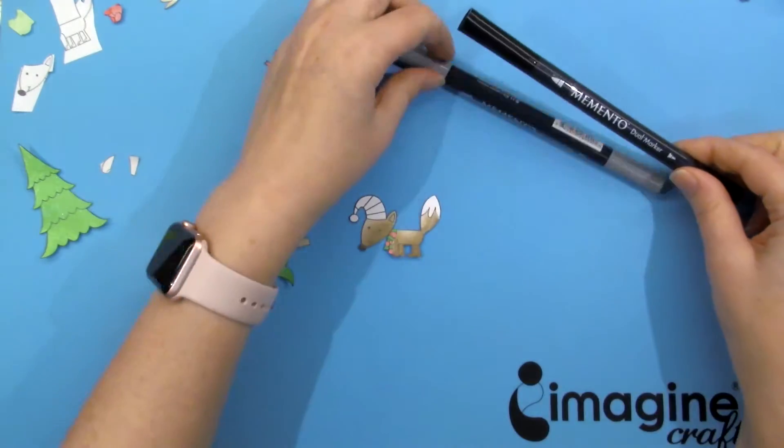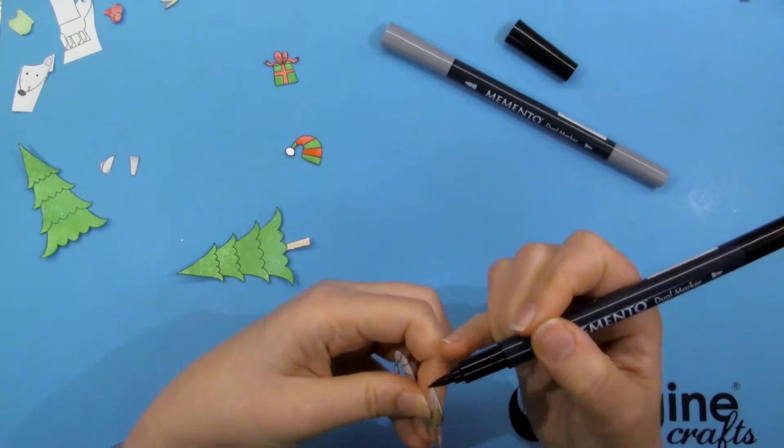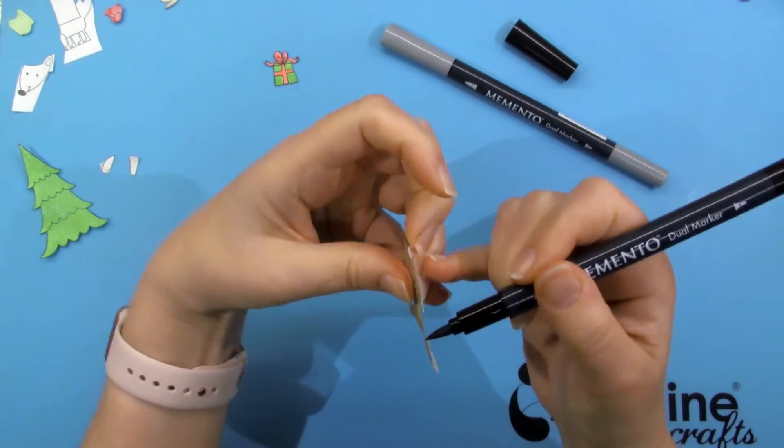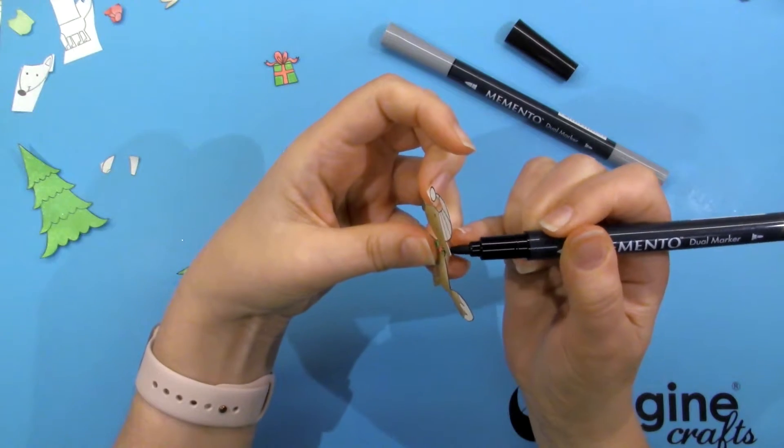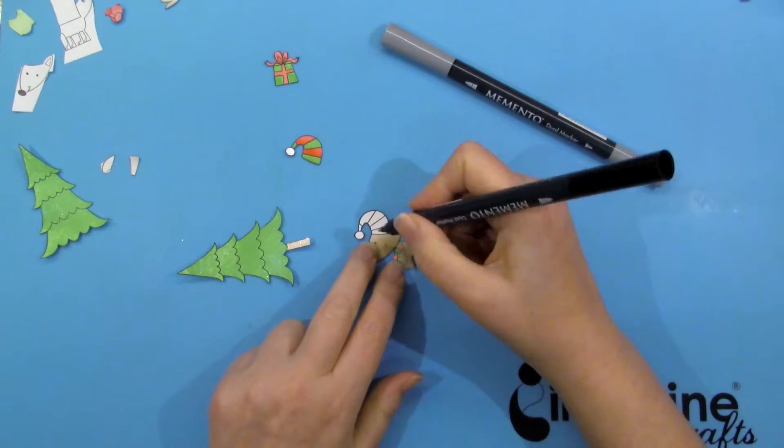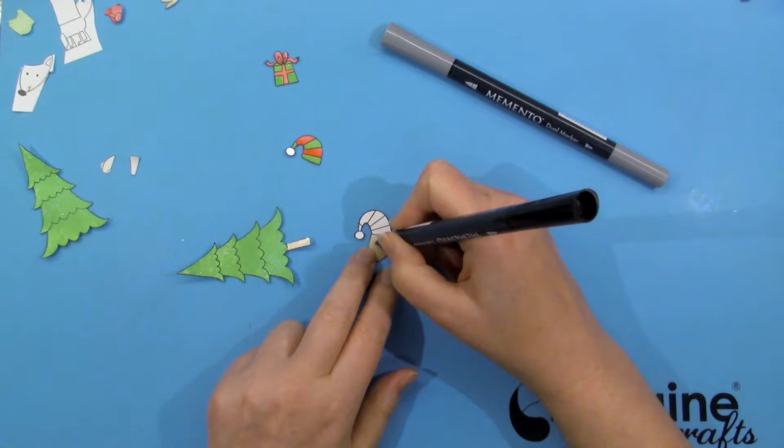I'm going to use my Tuxedo Black Memento Dual Brush Marker to go around the outsides of all my cutouts. This gives them a nice finished look. Note that I do this from the back side in case the marker slips. I use the fine tipped end to go over any of the stamping that may have dulled down with the sprays.